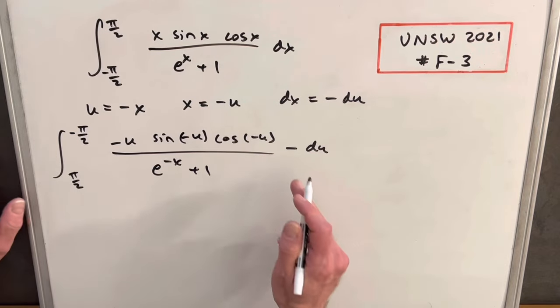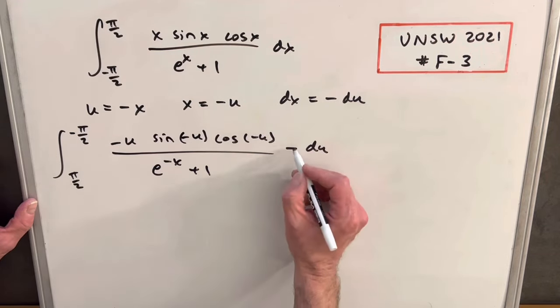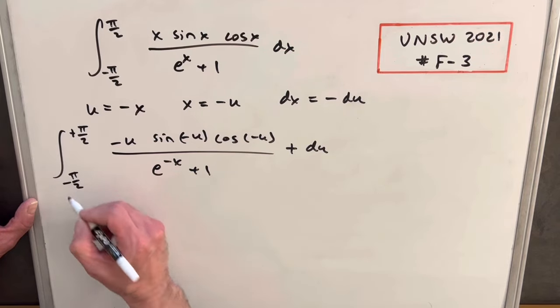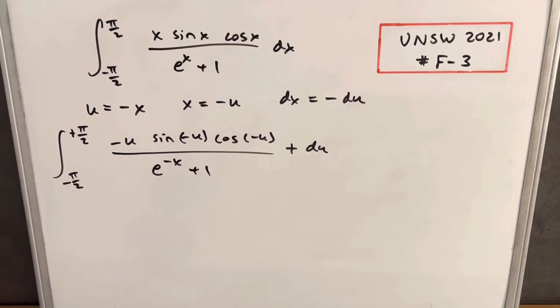Before I do anything, I can take this negative sign, bring it in front, and swap our bounds. This will become plus, and this will become minus, just because we're switching or flipping those.